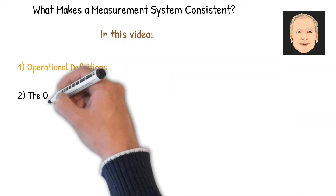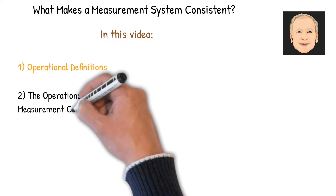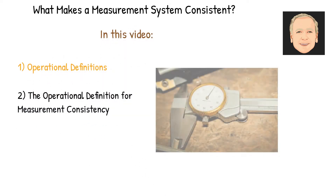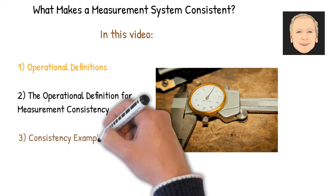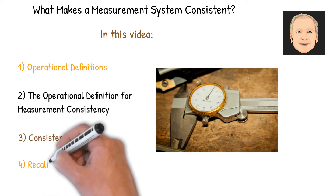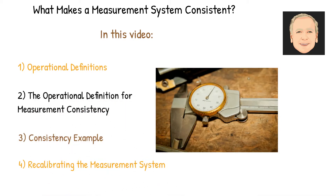We're going to start with operational definitions and then talk about the operational definition for measurement consistency. We're going to show an example, talk about recalibration, and then summarize.